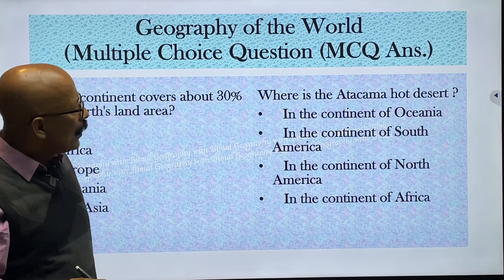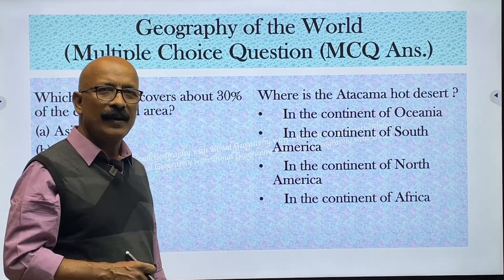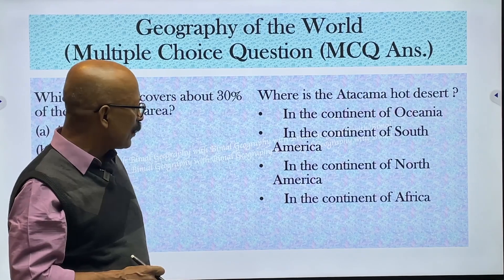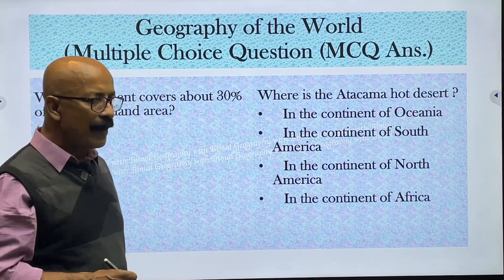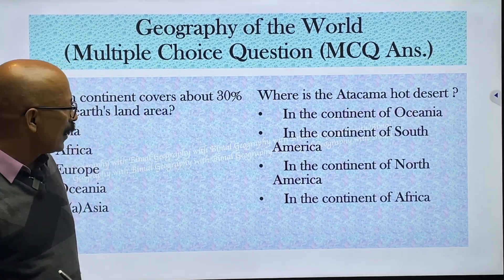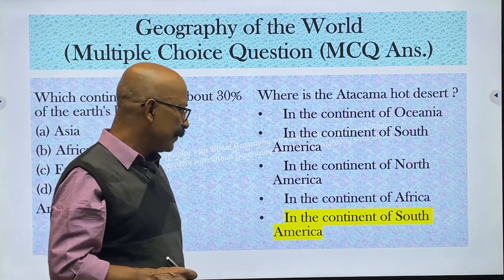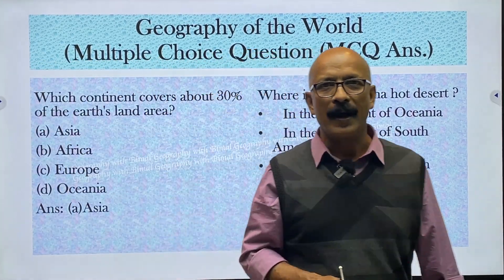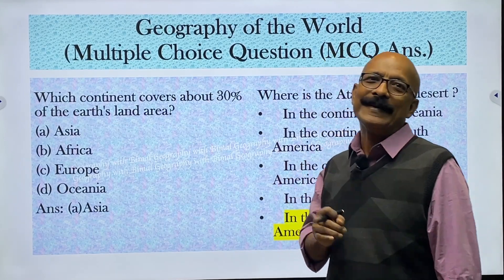Where is the Atacama Desert located? Options are Oceania, South America, North America, and Africa. The answer is South America. So Atacama, Equator, and Titicaca — all these peculiar names — are associated with South America.